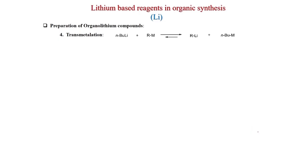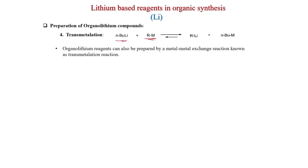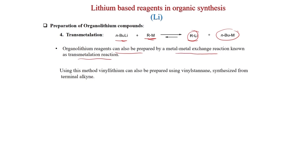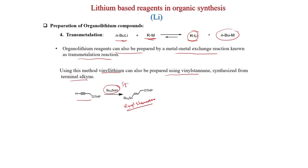Transmetallation: another metal reacts with n-BuLi so that the metal exchanges with lithium and n-butyl becomes n-butyl-metal. Organolithium reagents can be prepared by metal-metal exchange, known as transmetallation. Using this method, vinyl lithium can be prepared from vinyl stannane synthesized from a terminal alkyne. If the terminal alkyne is treated with tri-n-butyltin hydride, the vinyl stannane is formed by syn-addition, and treatment with n-BuLi gives the vinyl lithium species.